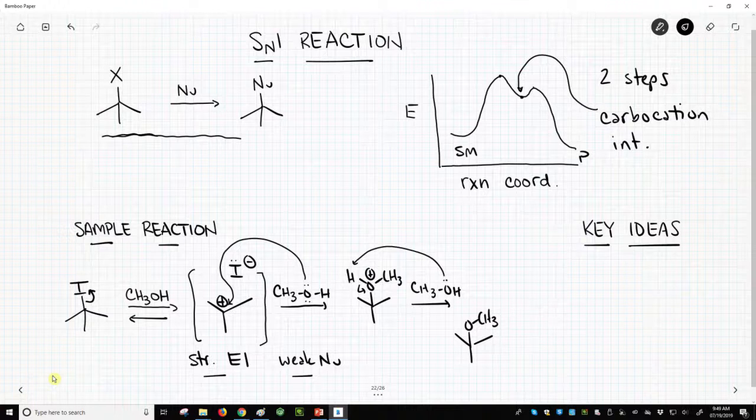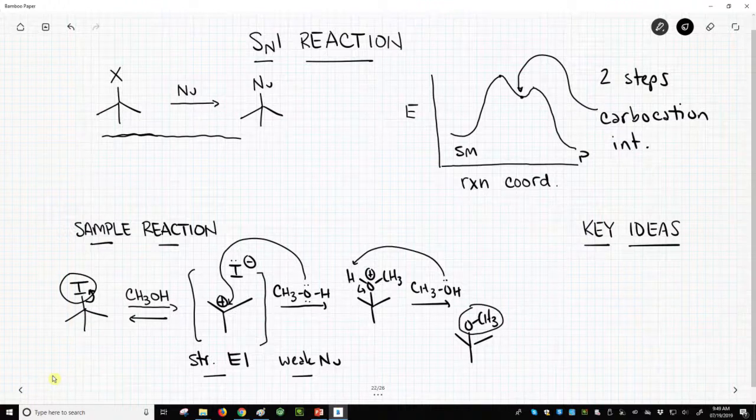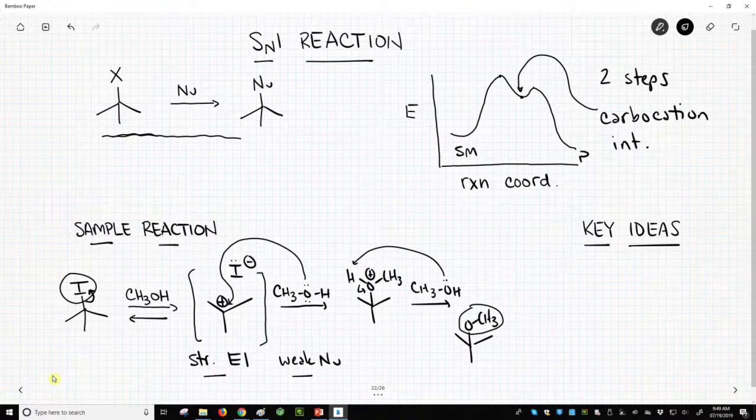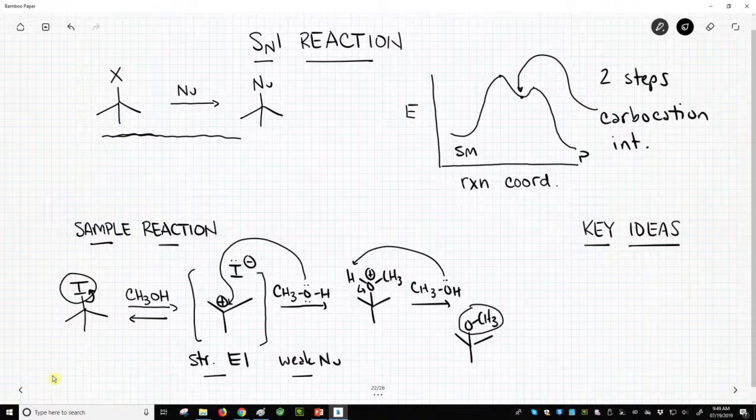We've done a substitution. We initially had an iodide attached to our tert-butyl group. Now we have a methoxy group attached to our tert-butyl group. So we've done a net substitution. It took us three steps. Two of them are properly considered the SN1 steps. The leaving group leaves in the first step. We get a carbocation intermediate, and then that gets attacked by another nucleophile.